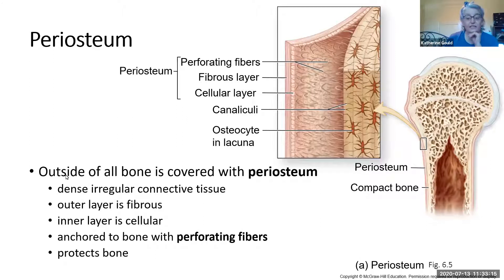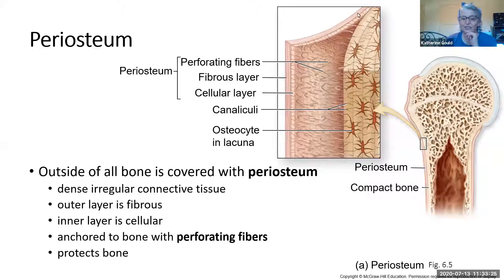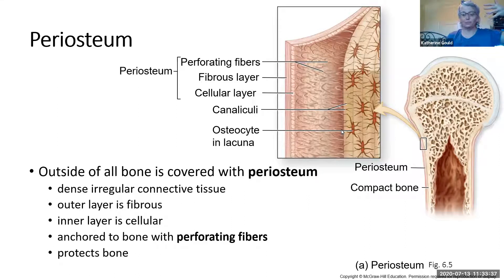It is a layer of dense irregular connective tissue, and it's actually made up of two layers: a fibrous outer layer and then a cellular inner layer. This inner layer is cellular, and it produces these little perforating fibers that actually perforate or make holes into the compact bone to attach themselves to the compact bone.